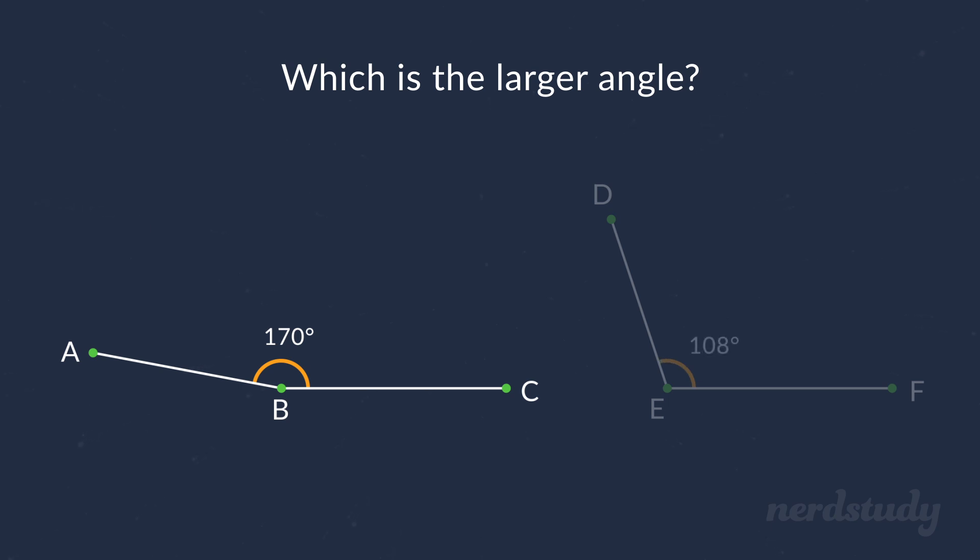Great! So, if we were given these two angles, which one would you say is the larger angle? This one? Or this one? Well, it would be angle ABC, since as we can see this angle is almost 180 degrees, while this angle is just a bit larger than 90 degrees, making it quite smaller than this one.